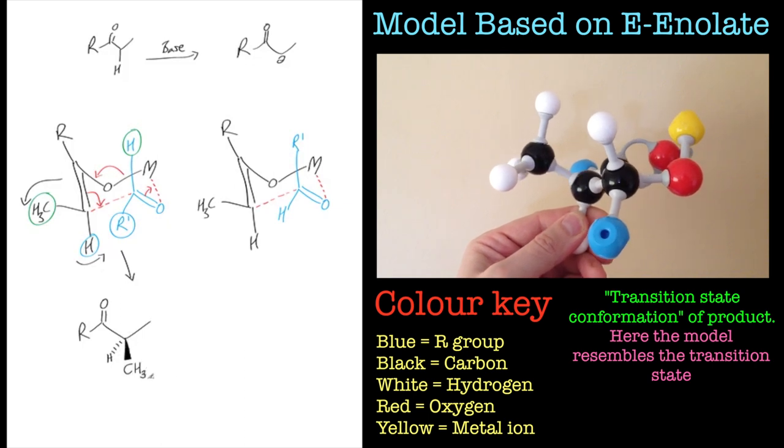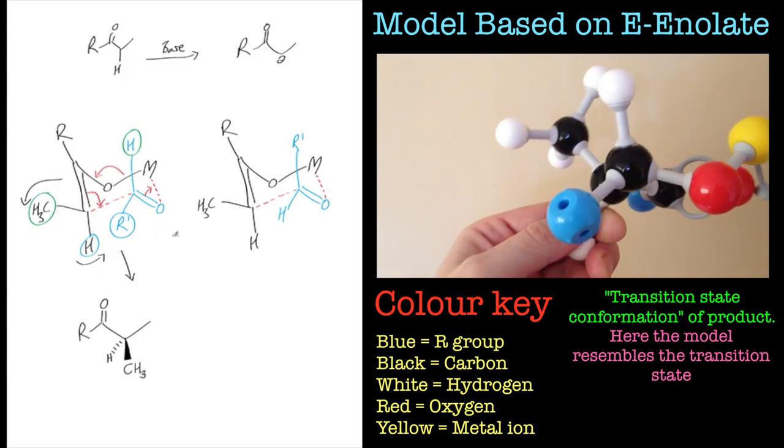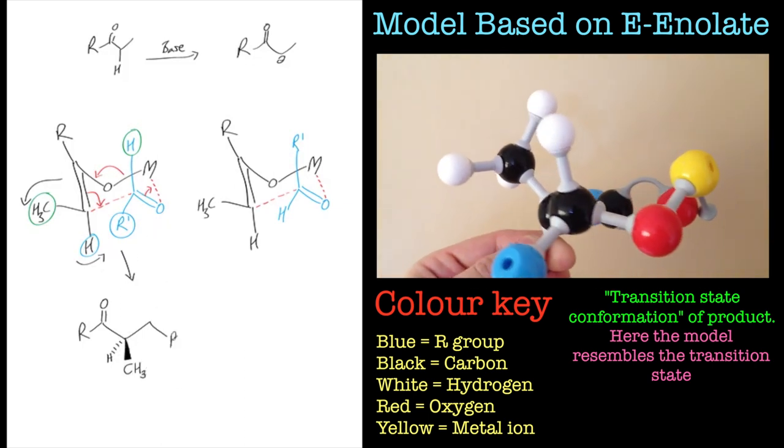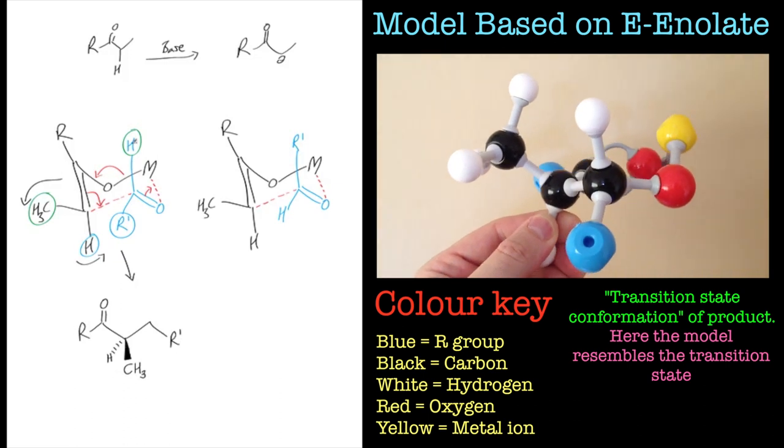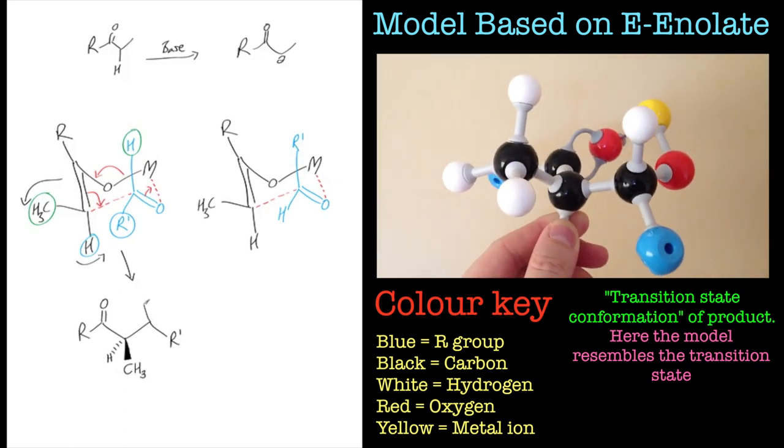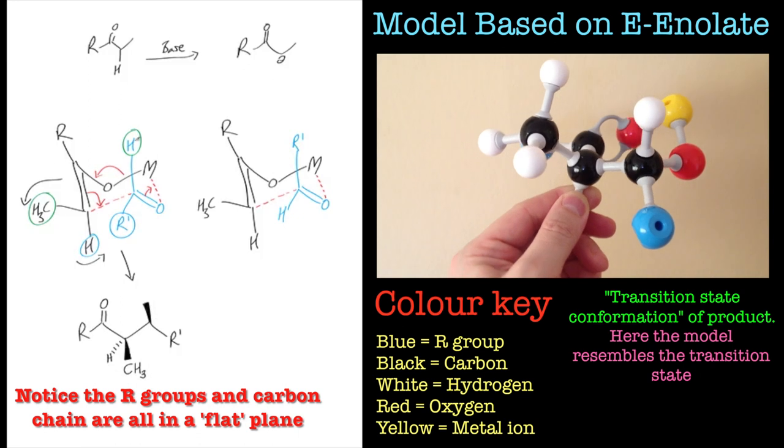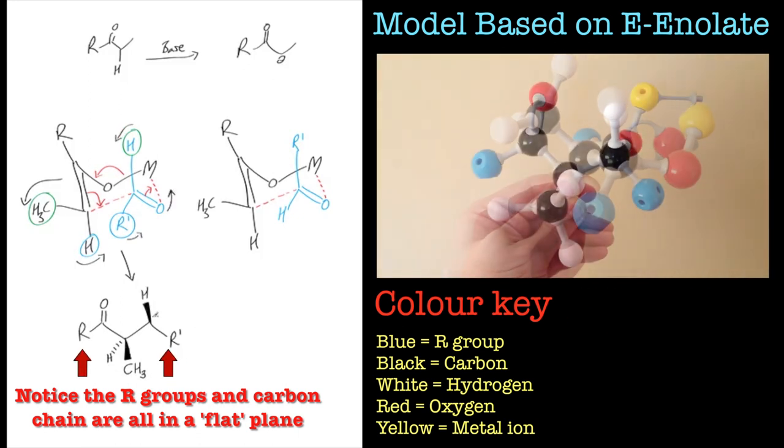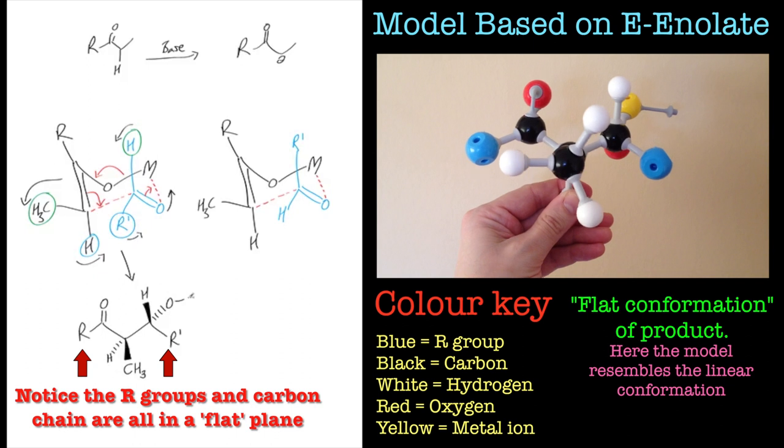So imagine the methyl group is rotated forward, which means the axial hydrogen has got to rotate backwards. So that puts the methyl group at the front and the hydrogen at the back.